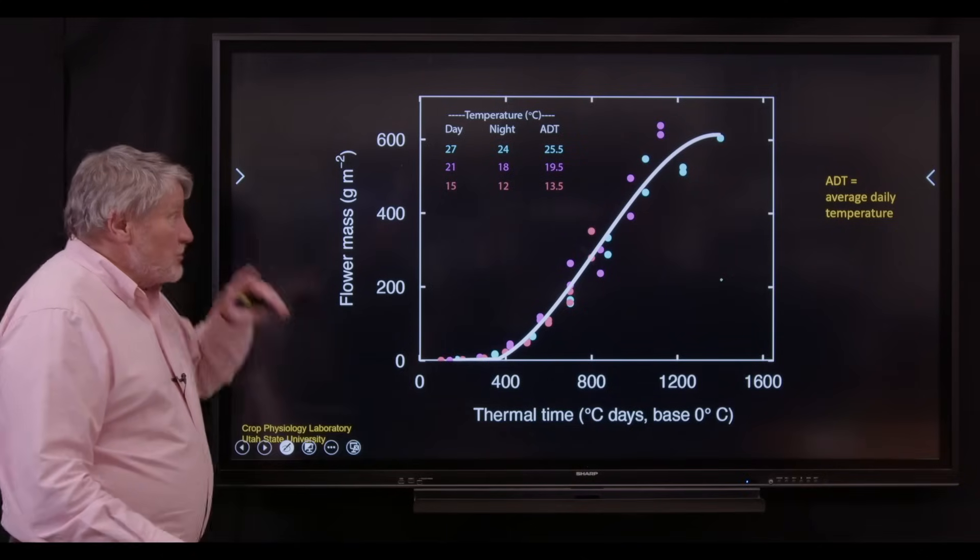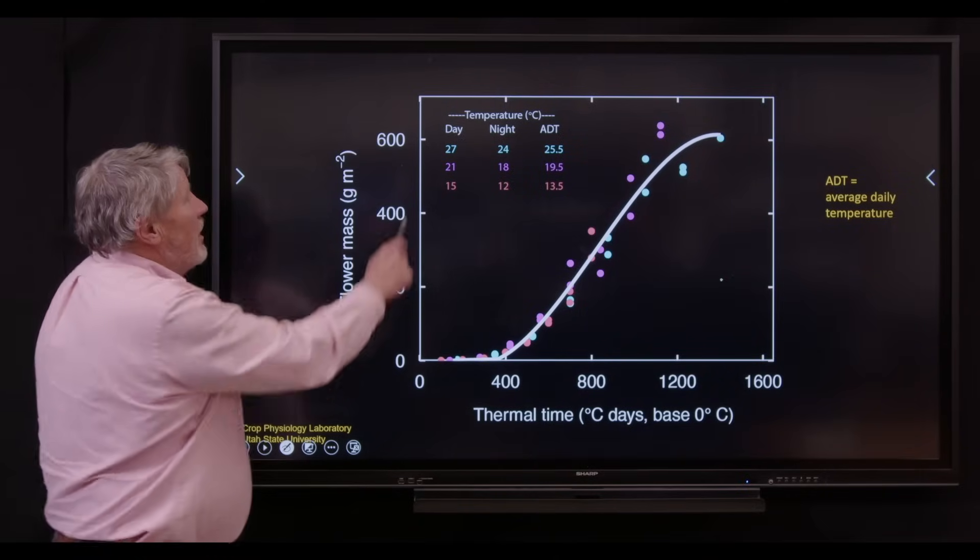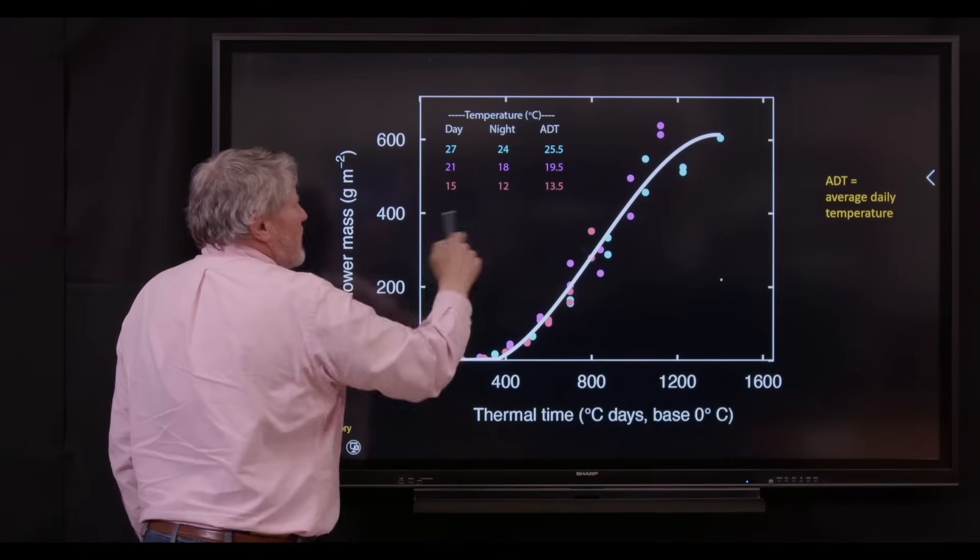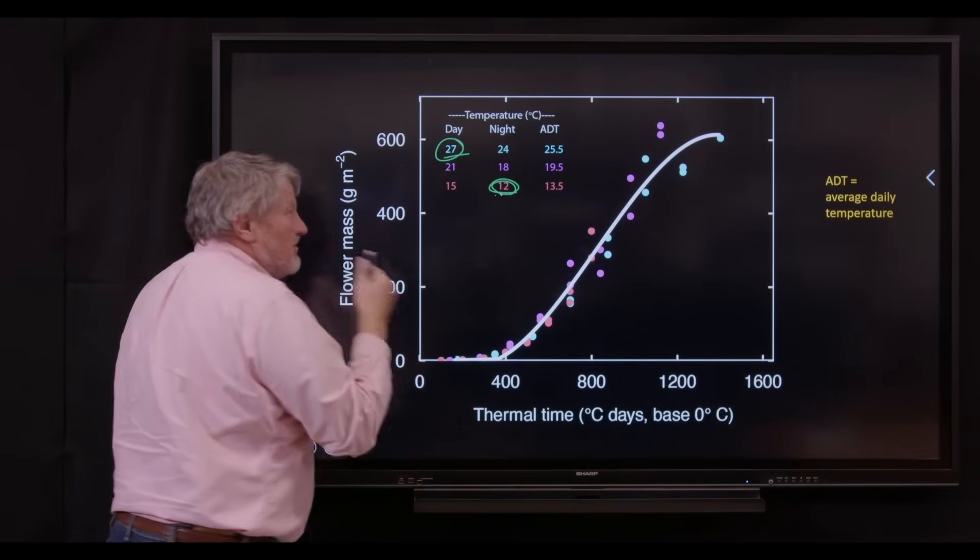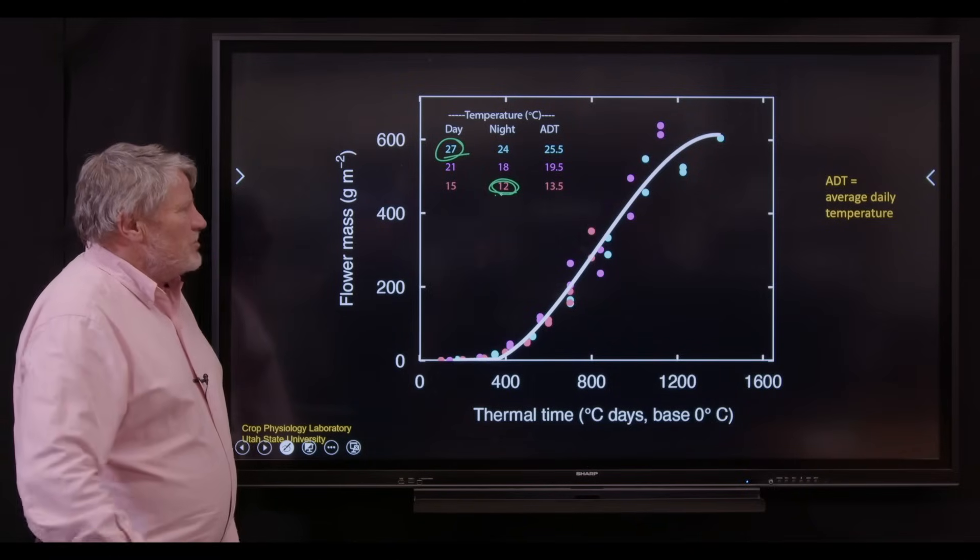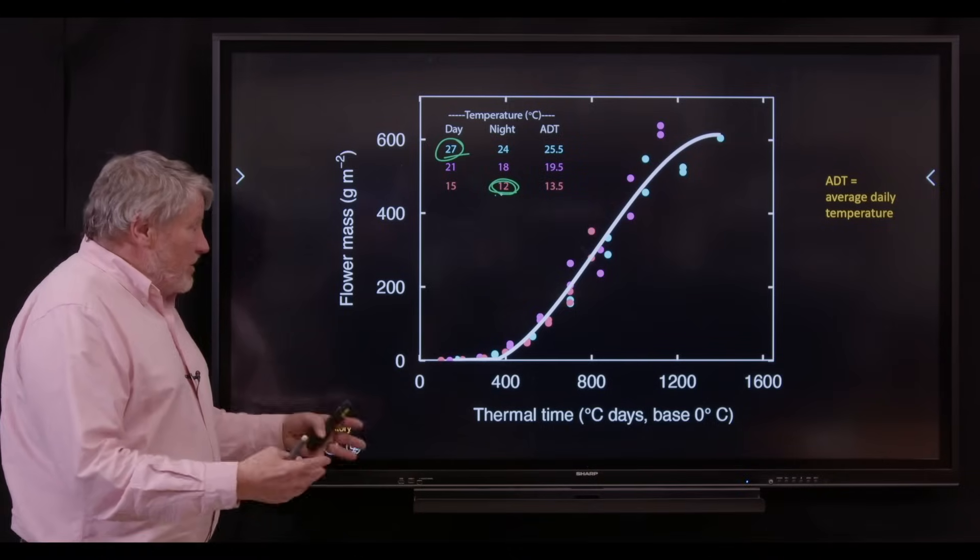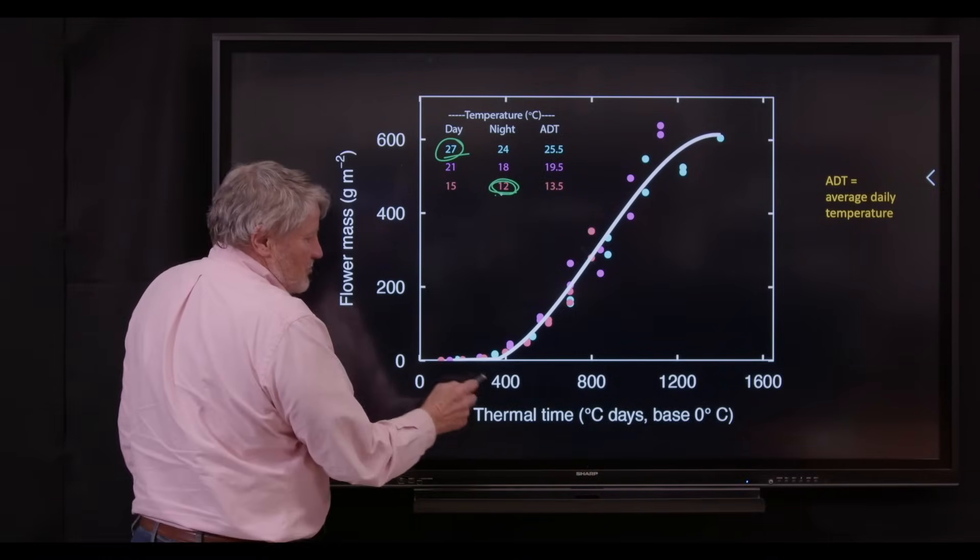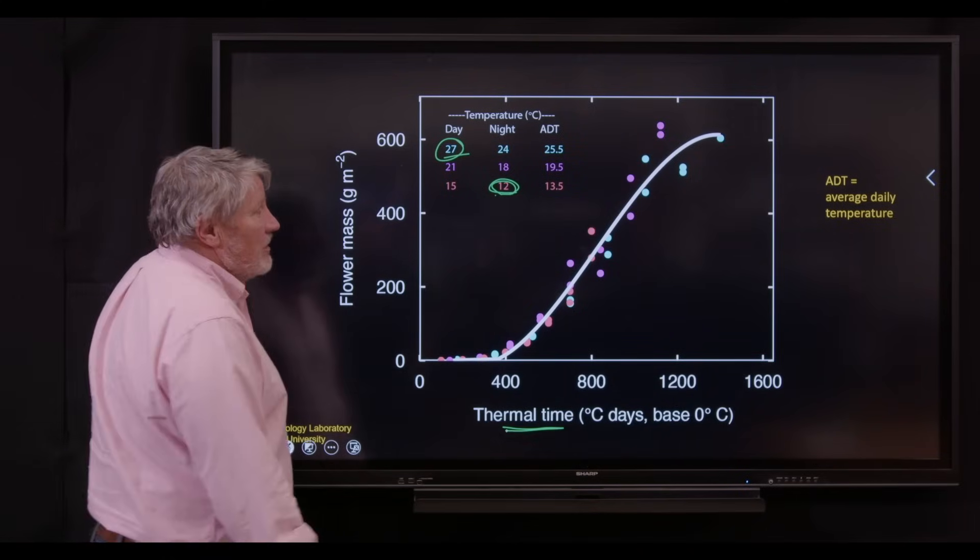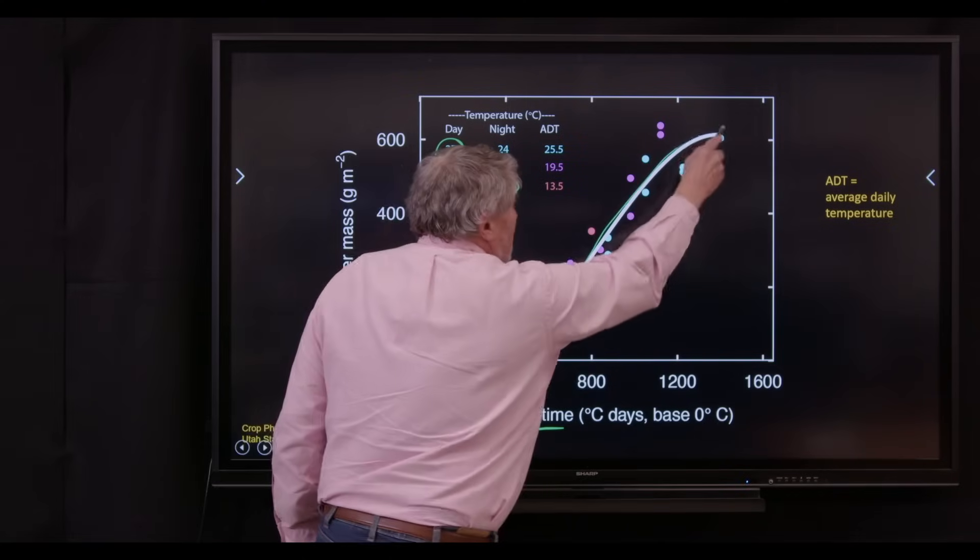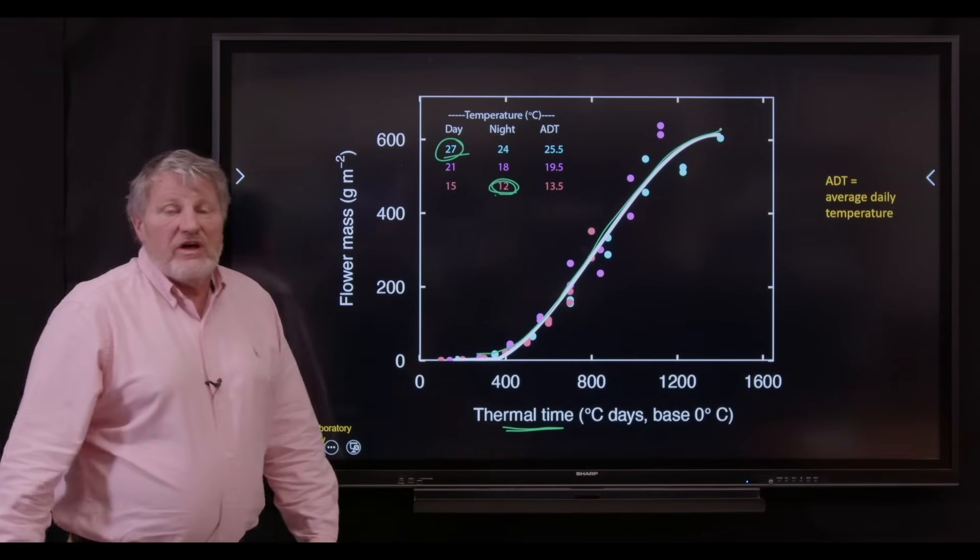What does it do in cannabis? So we recently completed a study. When I say we, this means Mitch Westmoreland. He did the work. Wildly different temperatures. Really pretty warm down to really cold. These are in Celsius. This is in the 80s and down into the 50s in Fahrenheit. A huge range of temperatures. And all the data fit one curve. The rate of development, meaning flower mass, is on a steady curve predicted by thermal time, also called degree days. This is quite remarkable that regardless of the extremes of temperature, if we add up degree days, we can predict rate of development of a crop.